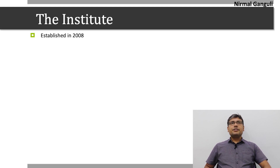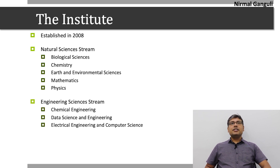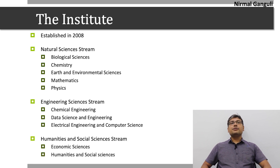Let's introduce the institute first. The institute, Aizar Bhopal, was established in the year 2008. It comprises three streams: the first is natural sciences stream including biological sciences, chemistry, earth and environmental sciences, mathematics and physics. The second is engineering sciences stream comprising chemical engineering, data sciences and engineering, and electrical engineering and computer science. The third is humanities and social science stream where the departments are economic sciences and humanities and social sciences.